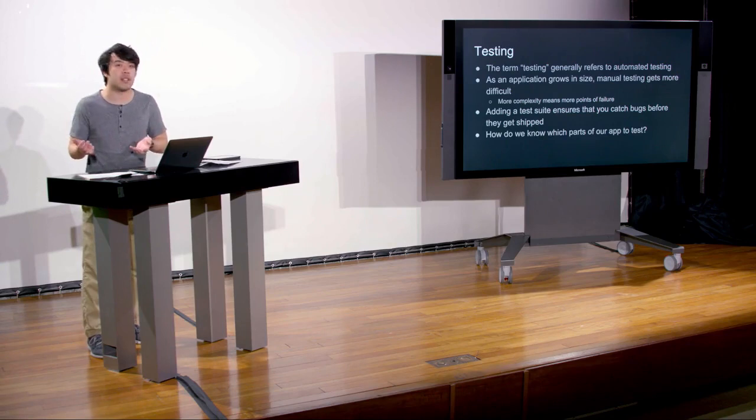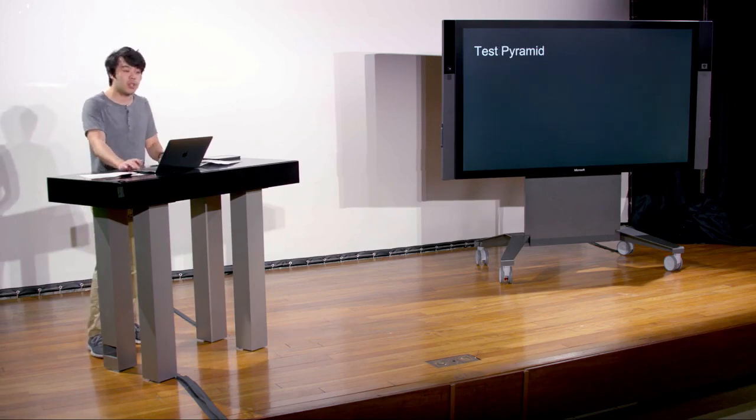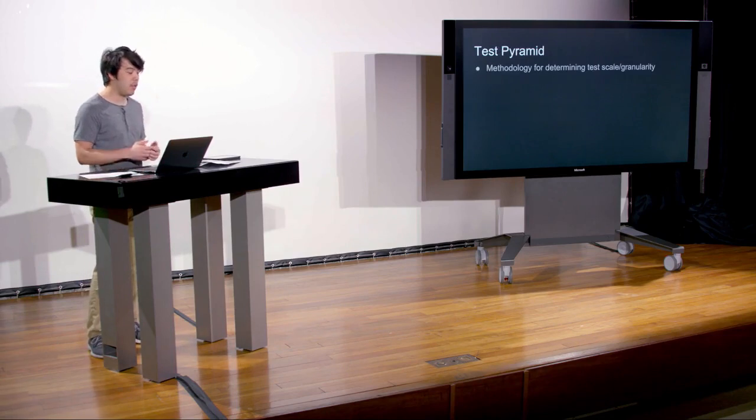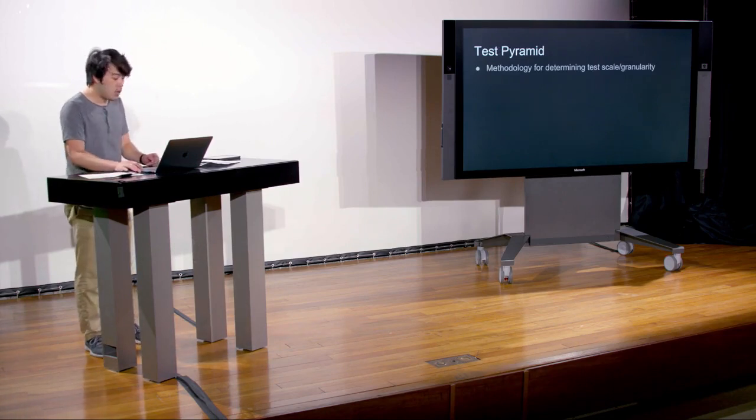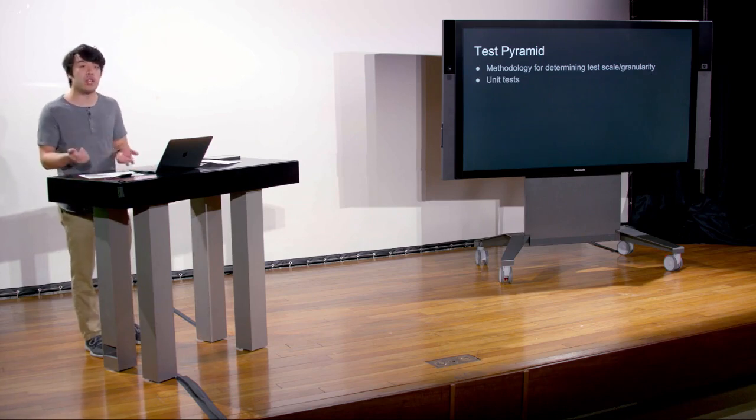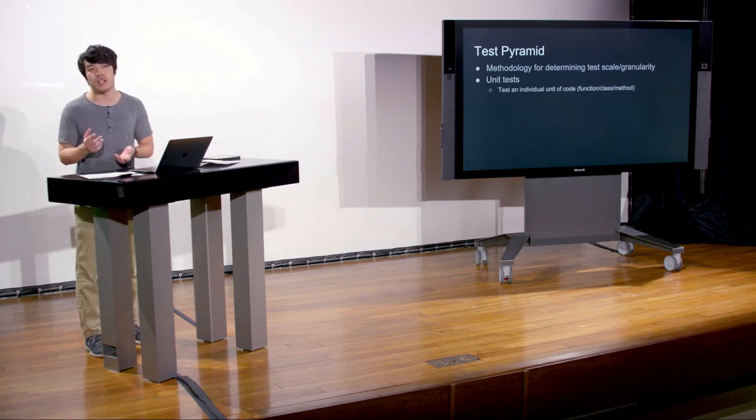There's a theoretical structure called the test pyramid that determines a methodology for test scale or granularity. At the very bottom are unit tests, which test an individual unit of code — generally a function, class, or method. Above that are integration or service tests, which test how multiple pieces of code work together, independent of the UI. At the top are UI or end-to-end tests, which test a feature thoroughly including the UI, network calls, and everything — basically what a user would do themselves.